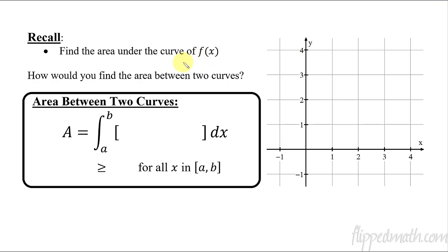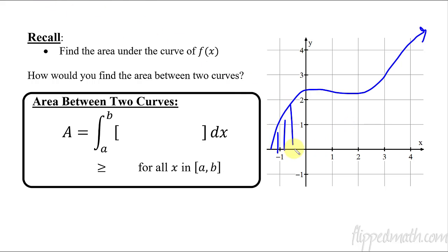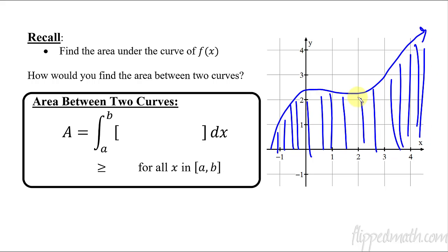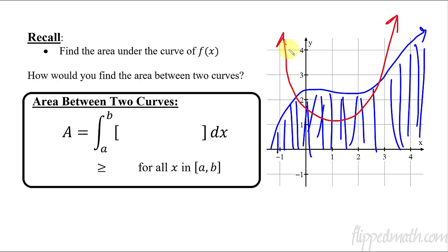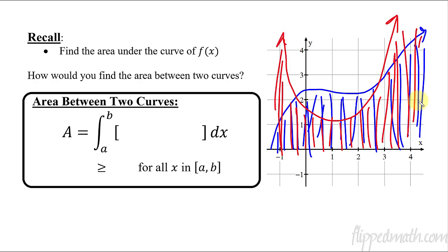Let's remind ourselves real quick: how do you find the area under a curve of f of x? I'm just going to graph here some random graph like this — f of x like that. The area under the curve is between the function and the x-axis. I'm going to graph another one — a parabola-looking shape in red. The area under that curve would be all of this area down to the x-axis.